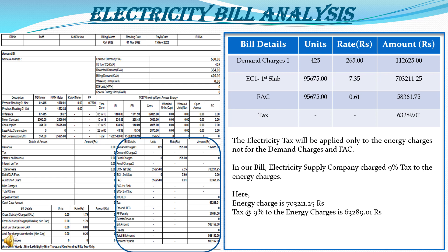The tax section: electricity tax is applied only to the energy charges, not to the demand charges and fuel adjustment cost. In our bill, the energy charges are 7,02,211.25 rupees. In our state, the electricity tax is 9%, so 9% of 7,02,211.25 equals 63,289 rupees, which is mentioned in the electricity bill.